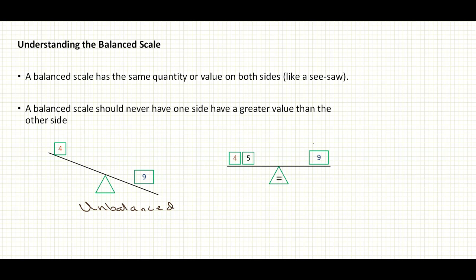Now this other scale here, you have four and five. If you add these numbers together, you have nine. So this is an example of what a balanced scale looks like. When it's balanced, you use the equal sign, because the equal sign tells us that the quantity on the left-hand side and the quantity on the right-hand side have the same value.